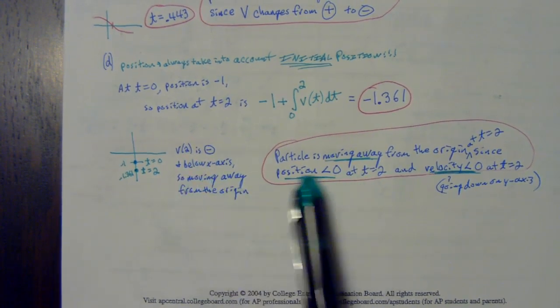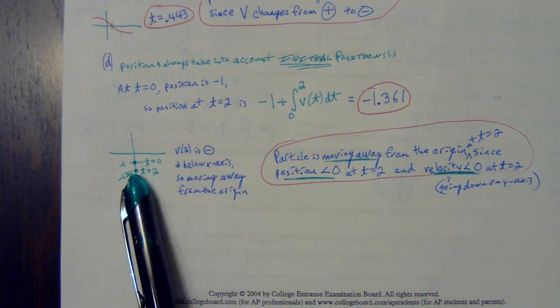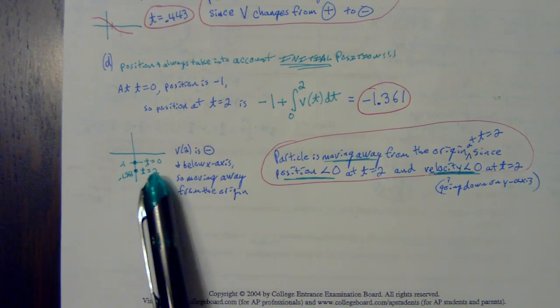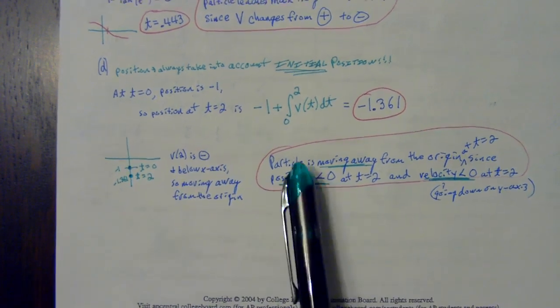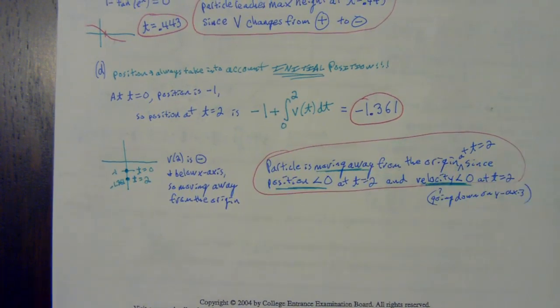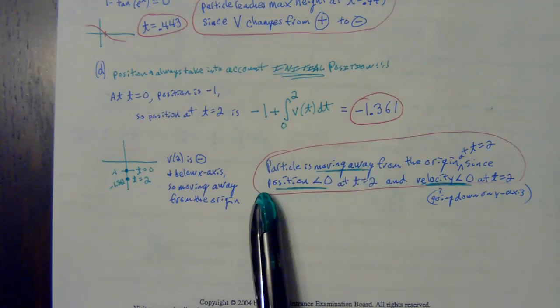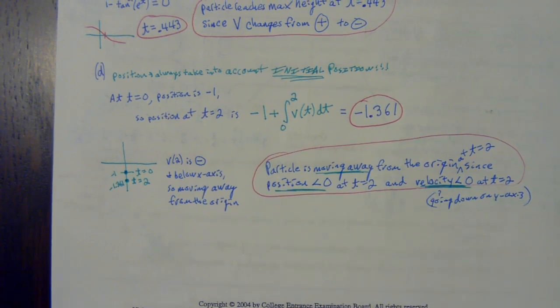I just reasoned it out like this. I think this is probably good enough. Then I rewrote it a little bit more technically. I just mentioned the velocity is negative, so I'm going down and my position is already below the x-axis, so that means I'm moving further away from the origin. Then I just stated it technically: particle is moving away from the origin at t equals two, since the position is less than zero and the velocity is less than zero. They want to hear moving away and the position is negative and the velocity is negative. That's what tells us that.